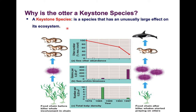Let's look at this food chain before the killer whale was introduced. We see the sea otter abundance at about 100%. The sea urchin abundance is around 50 grams per meter squared, and the kelp density is pretty high at around 10 per 0.25 meters squared.